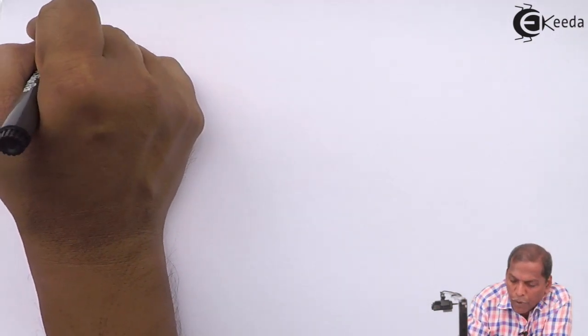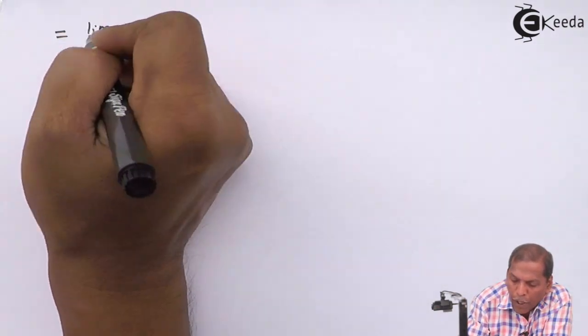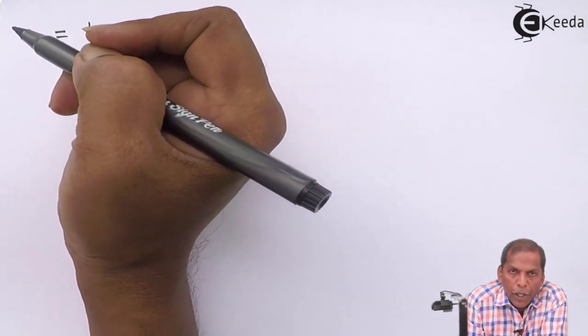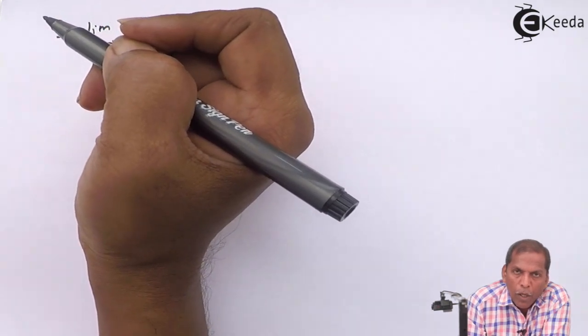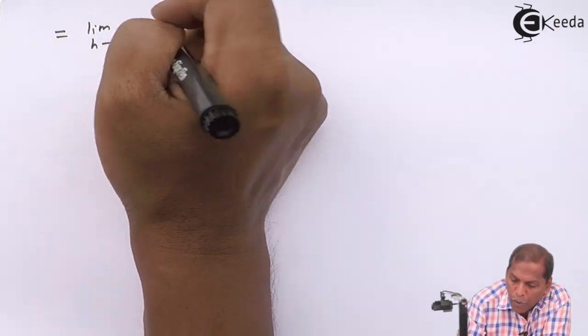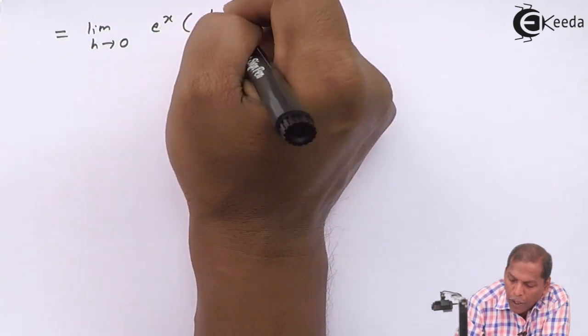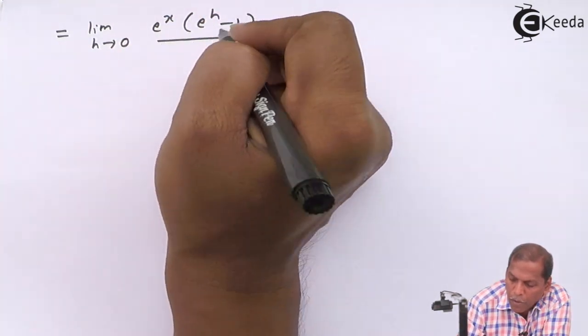So the next step will be is equal to limit h tends to zero. Now here we take e raise x common from the numerator, so we have e raise x in bracket e raise h minus one, whole thing divide by h.